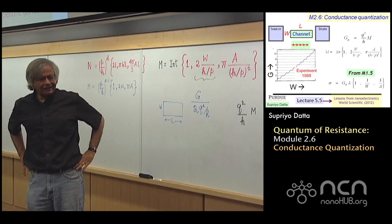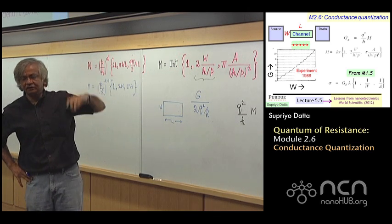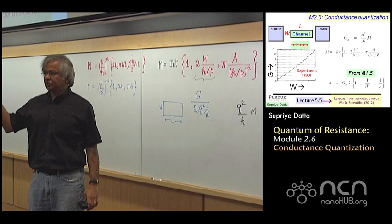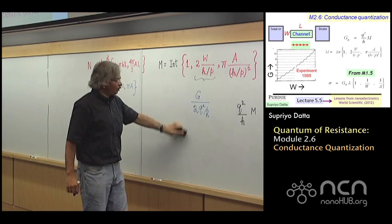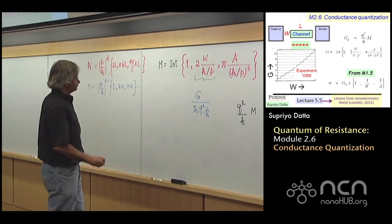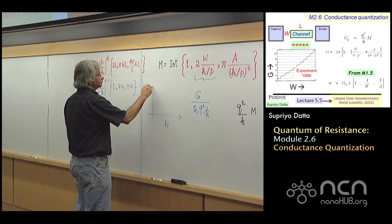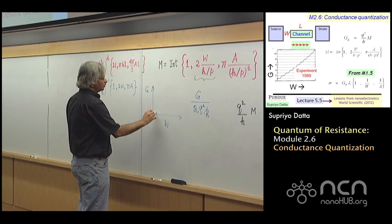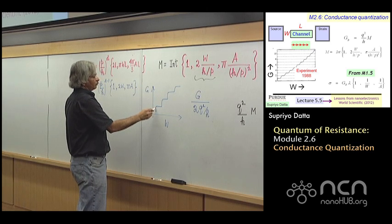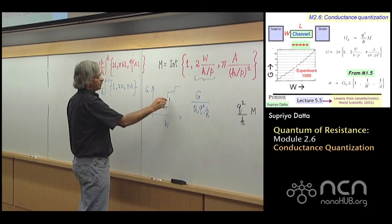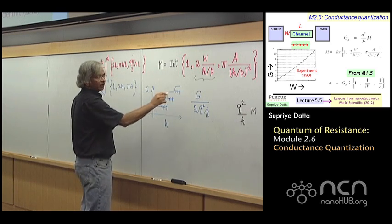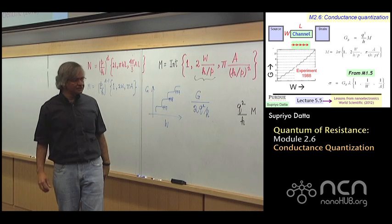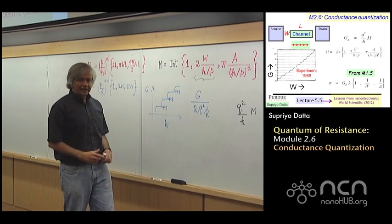Now one thing you might wonder is, well, why do I have to go to small things to see this? Shouldn't you be able to see it even with much larger conductors? So for example, instead of going 1, 2, 3, et cetera, couldn't you be going conductance versus width of a relatively large conductor? And couldn't you see something like this where this may be 997, that could be 998, that could be 999, and so on. And the answer is that, well, remember that the conductance we are calculating is at a given energy.